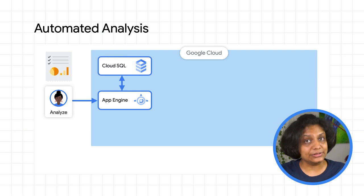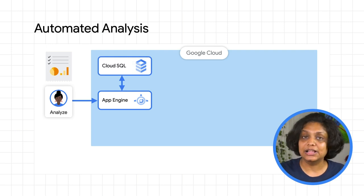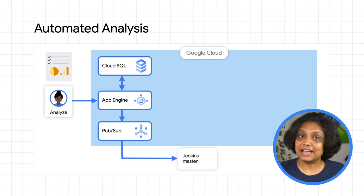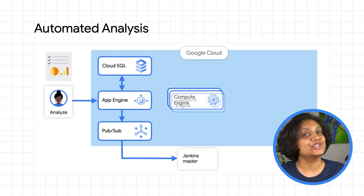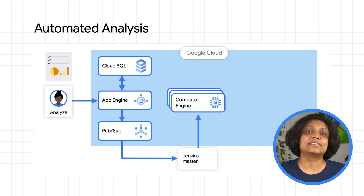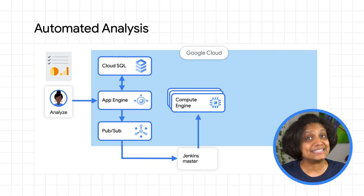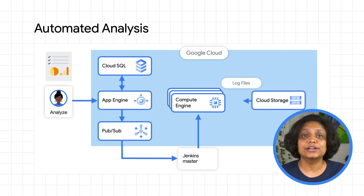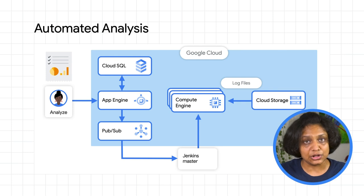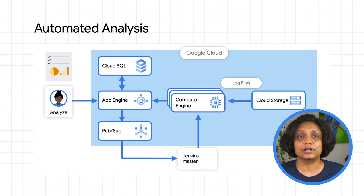App Engine would store the request into Cloud SQL and send it to the PubSub messaging service. Jenkins Master would pull the analysis request and distribute the job to a bunch of Compute Engine worker instances. These instances were always alive, waiting for requests to be sent to them. The worker would send a request to Cloud Storage for the log files for that specific date and time range, process those logs for analysis, produce the results, and then store them back in Cloud SQL and publish to App Engine.